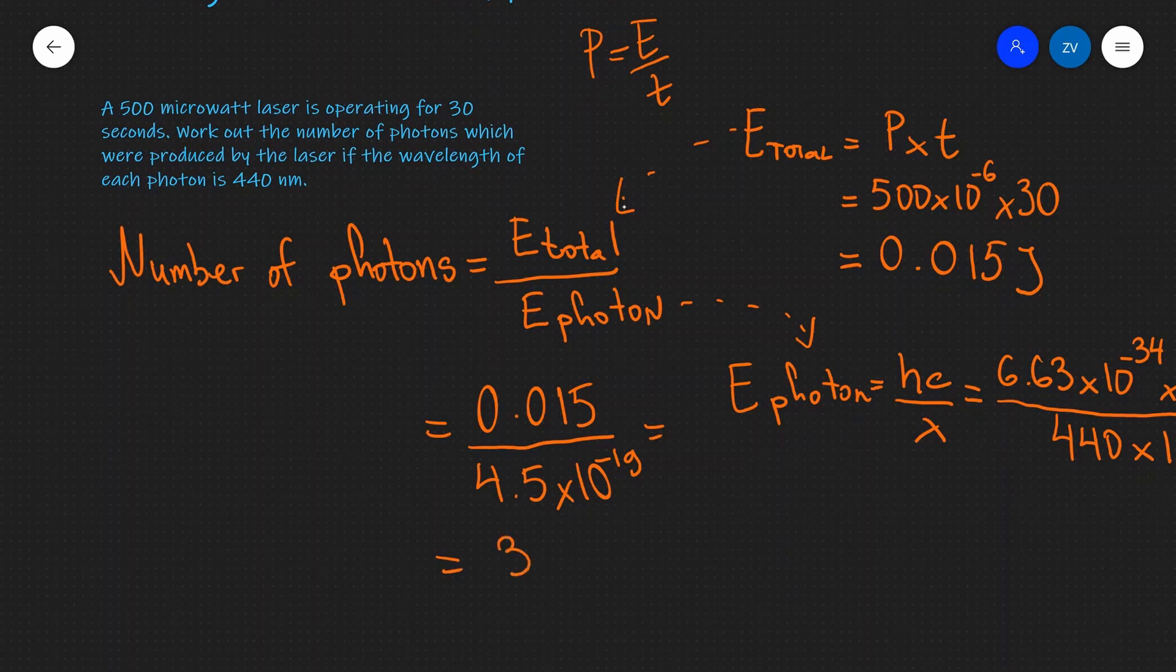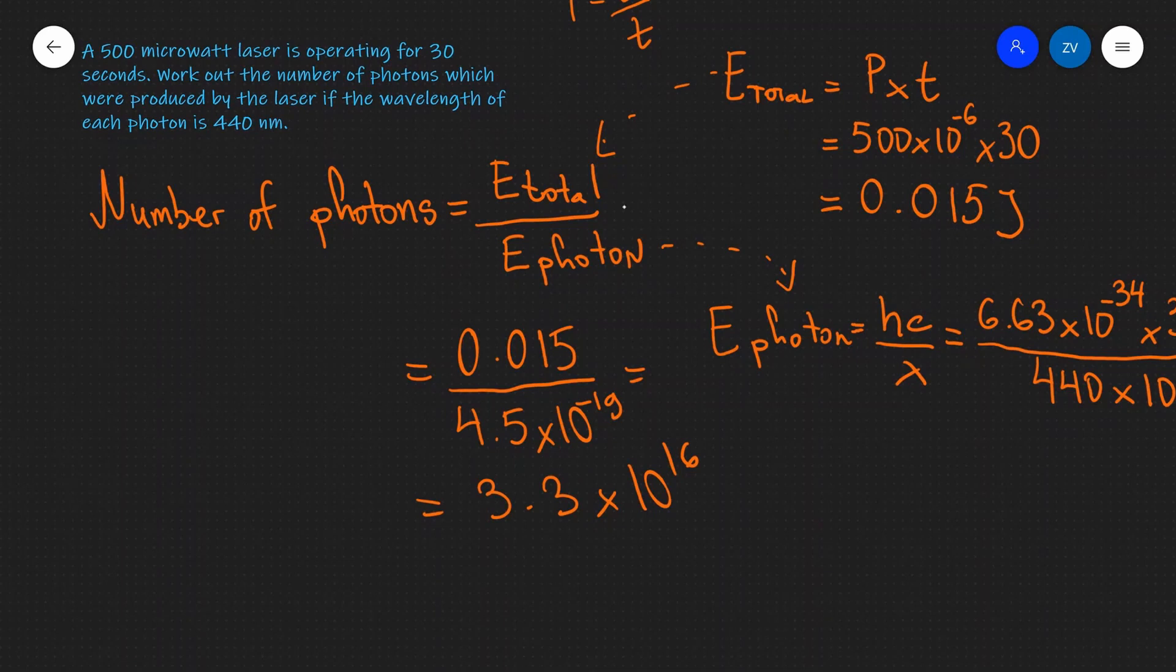If I input this into a scientific calculator, I'm going to get about 3.3 times 10 to the power of 16 photons. So this over here is our number of photons.